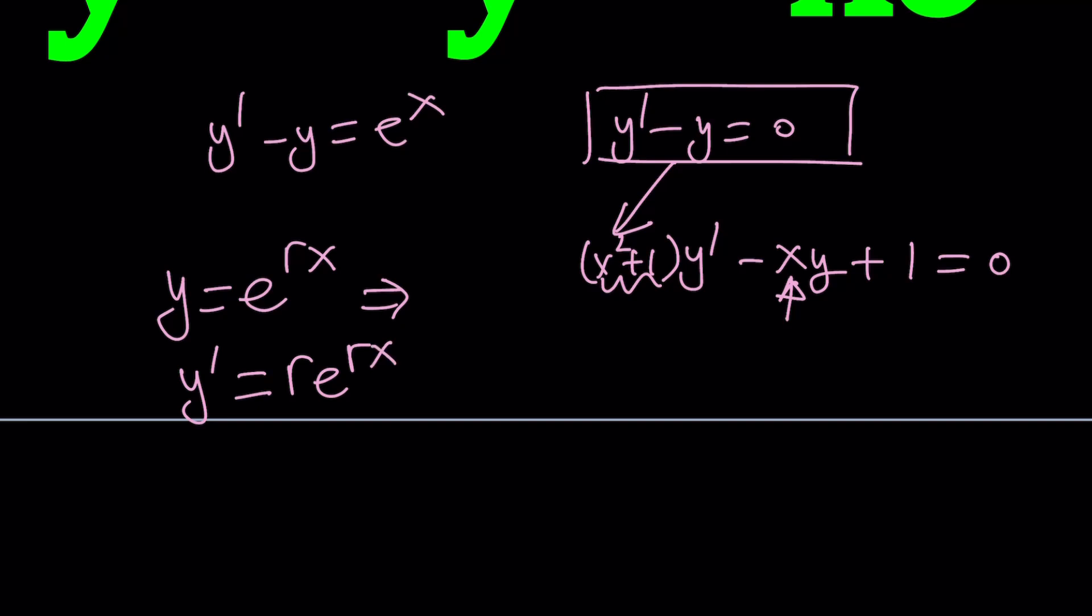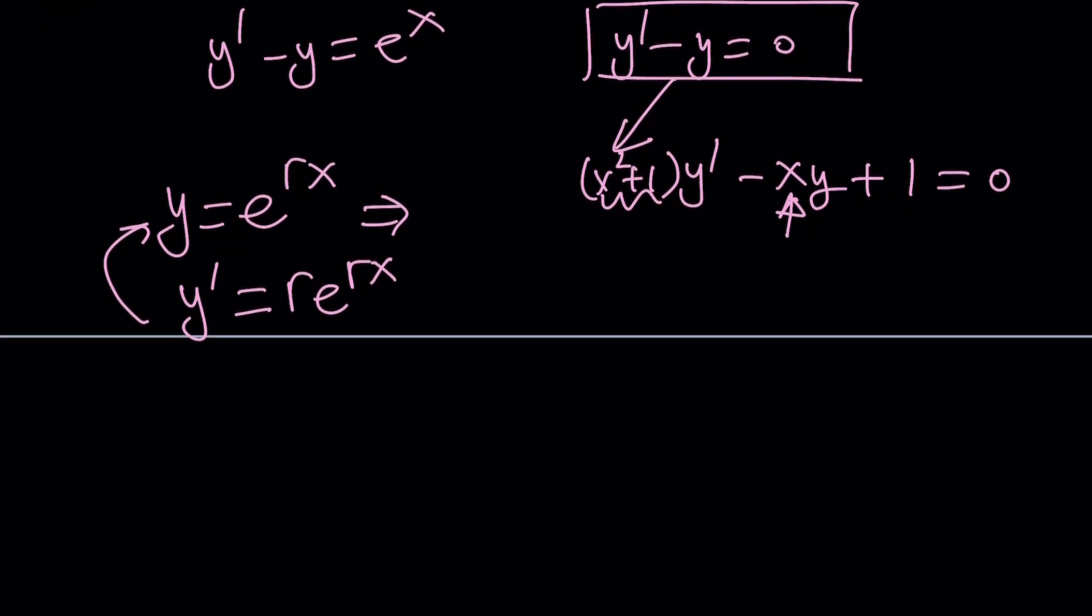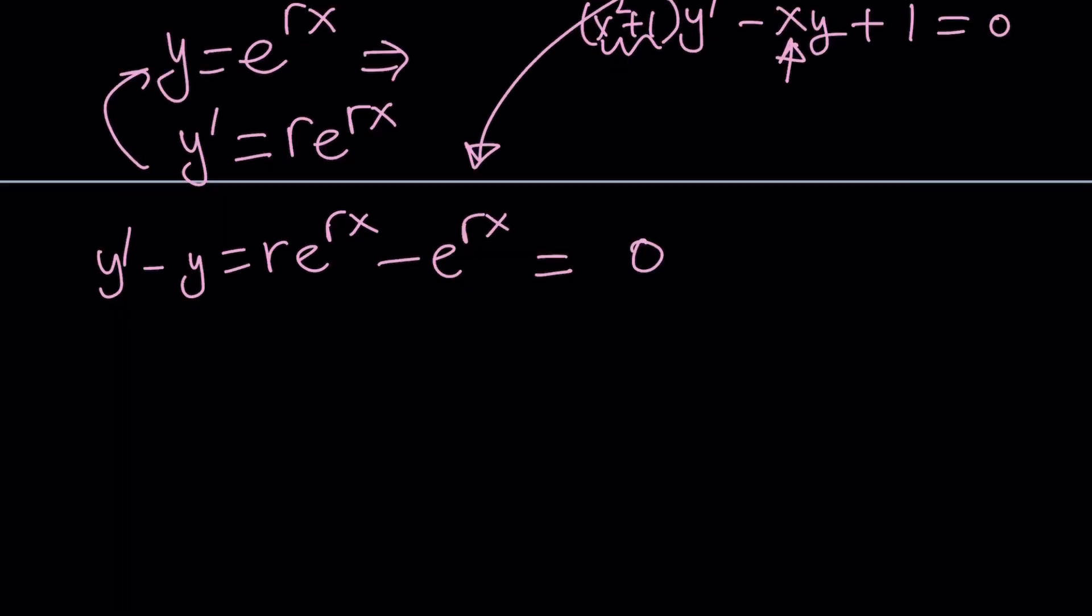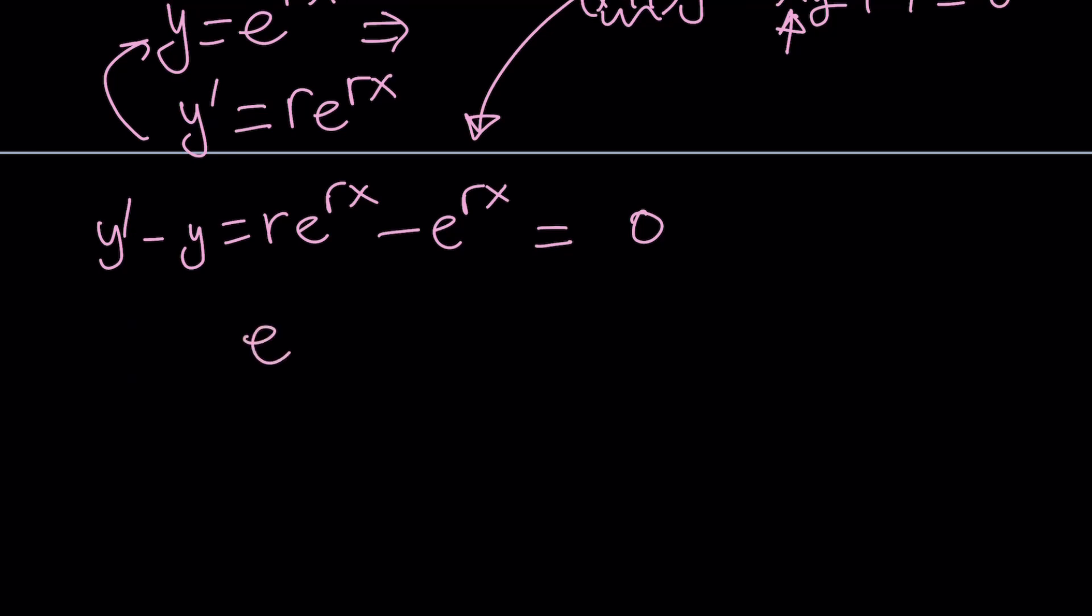That's going to give us y' minus y equals r e to the rx minus e to the rx. Based on our homogeneous equation, it should be equal to 0. In this case, we factor out the e to the rx and that gives us r minus 1 equals 0.